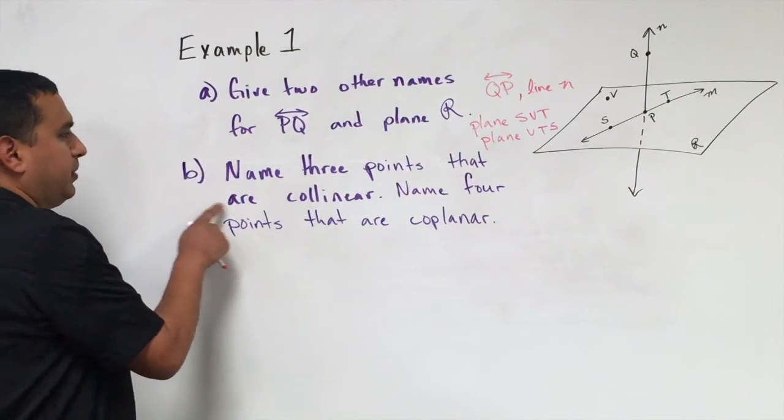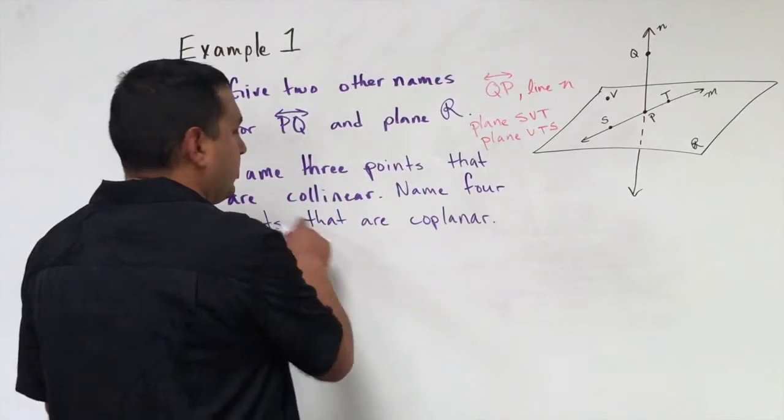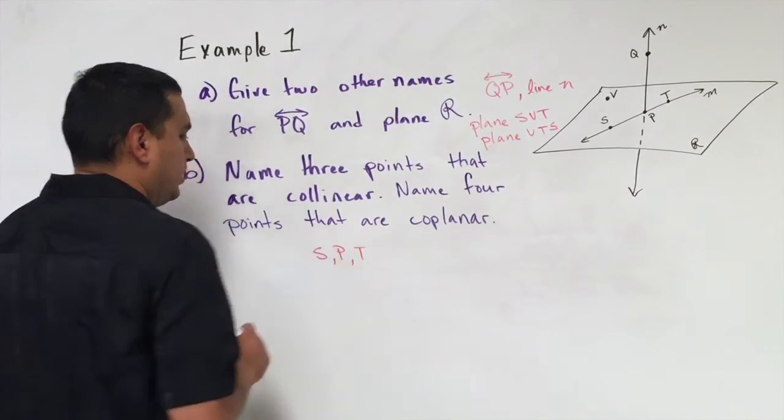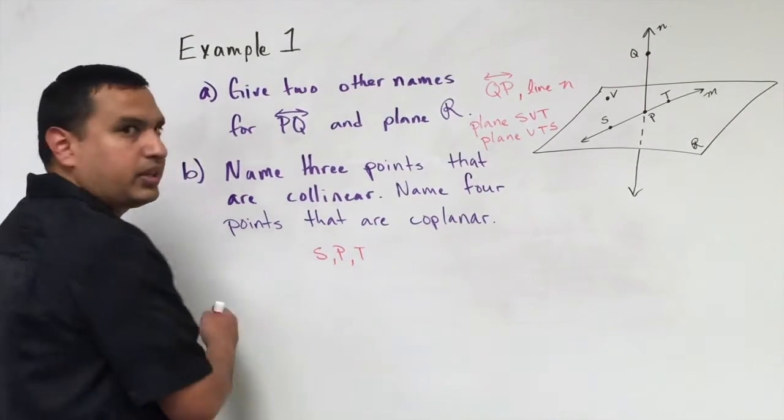For example B, it says name three points that are collinear. So those are three points that are on the same line, that would be S, P, and T. Make sure that you're using capital letters, otherwise it is not right.